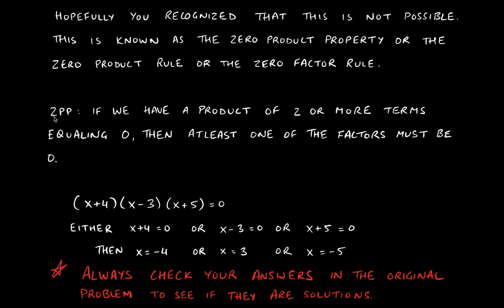The rule itself says: if you have a product of two or more terms equaling zero, then at least one of the factors must be zero. It's possible two of them, or three of them, or all of them are zero — and that's okay. But at least one of them must be zero. There's no way out without that happening.